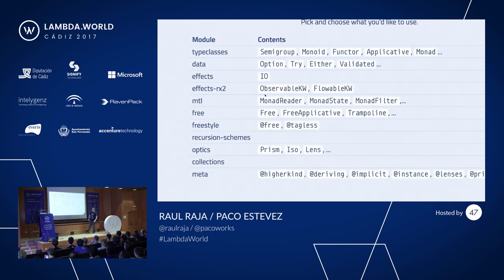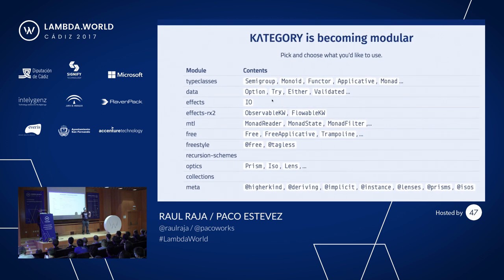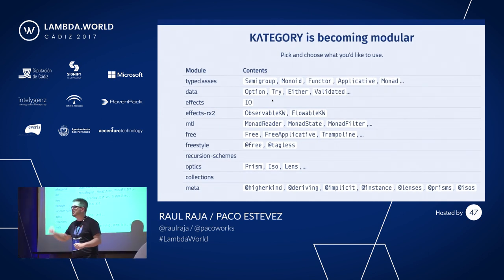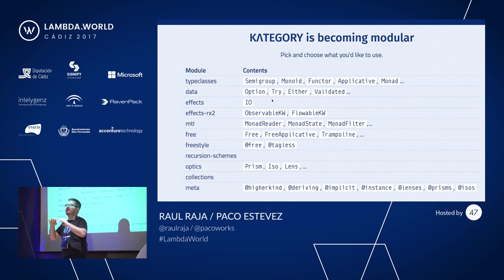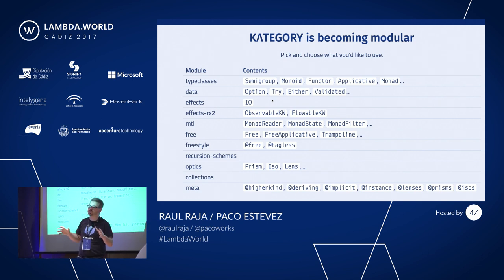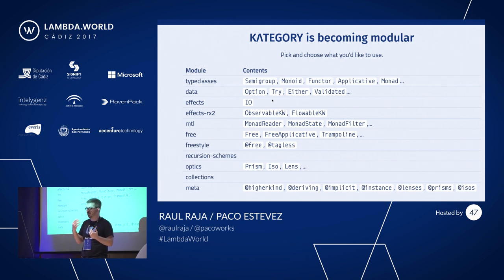For those of you worried about the size of this library — because it seems to have many functions, comprehensions, data types, type classes, effects — what we like to say is that we are aiming for modularity. You don't have to take the whole library day one and put it into your application. You can just pick and choose the ones that are important to you. Get the basic core and from there expand to the rest as you see fit or as it starts to fit in your current program or application.